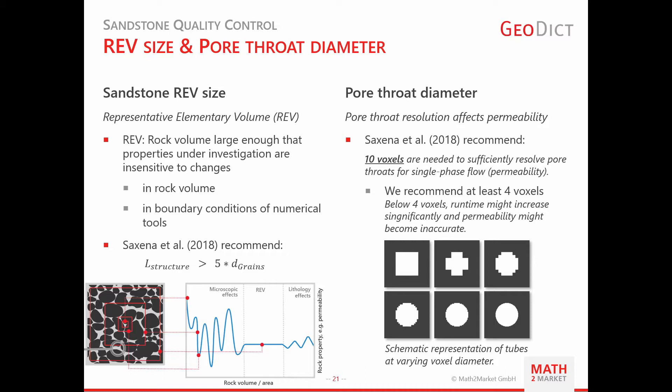The recommendation is to have a structure length of at least 5 times the effective grain diameter. The pore-throat resolution is essential for obtaining highly accurate results for digital rock analysis. Saxena et al. recommend 10 voxels to sufficiently resolve the pore-throats for single-phase flow. In sandstones, we would recommend at least 4 voxels, based on permeability results for a simple tube with different voxel resolutions.